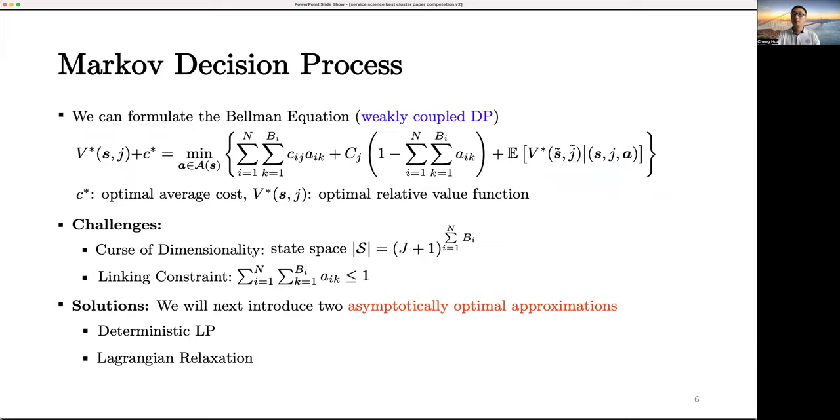Then, we can formulate this problem as an average-reward weakly-coupled Markov decision process. The state space captures unit availability at each station, and the action space covers unit dispatch decisions. This problem's complexity and the linking constraint, which is where the weakly-coupled comes from, make this problem really challenging. We shall use two approximation policies next, both with asymptotically optimal theoretical guarantees.